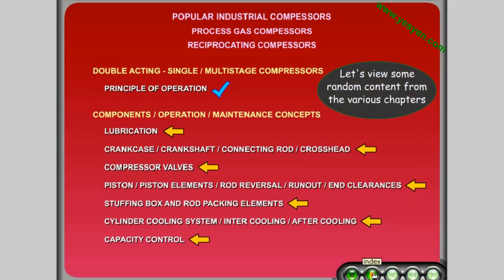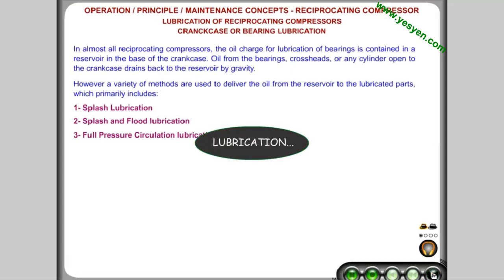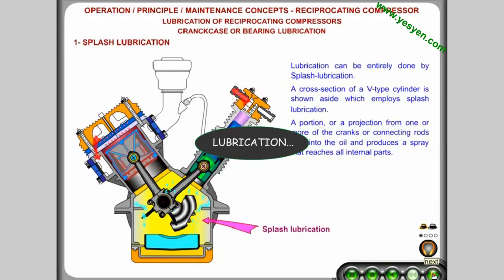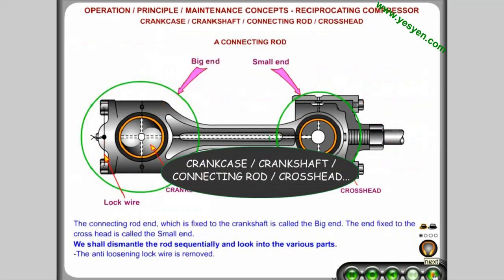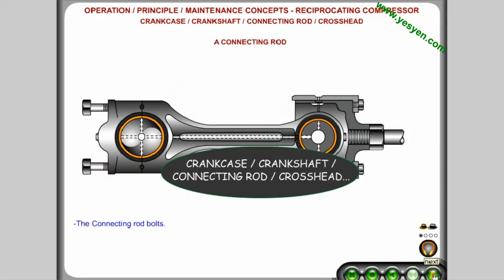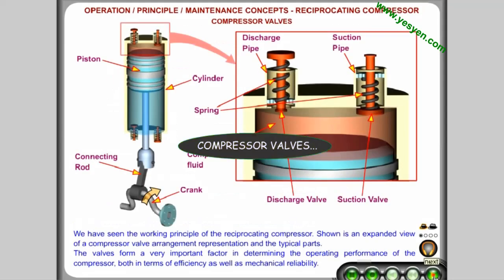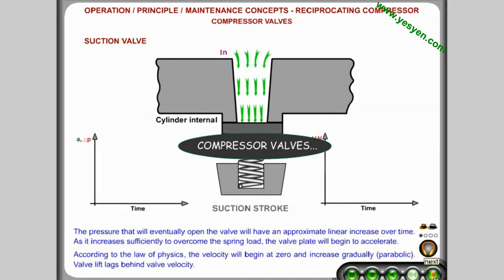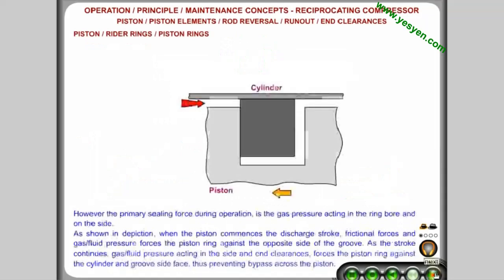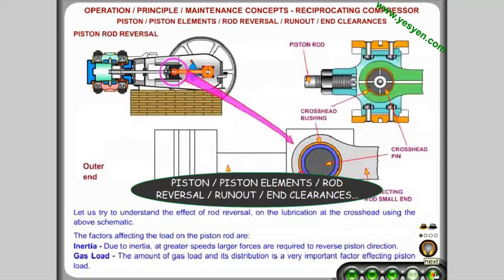Let's view some random content from the various chapters. Topics covered include lubrication, crankcase, crankshaft, connecting rod and crosshead, compressor valves, piston and piston elements, rod reversal, runout, and end clearances.